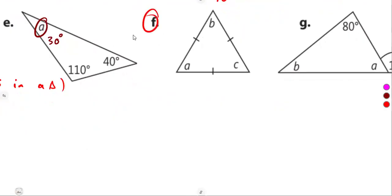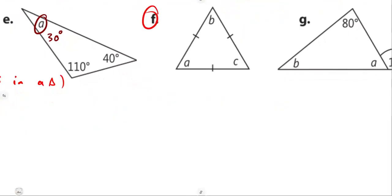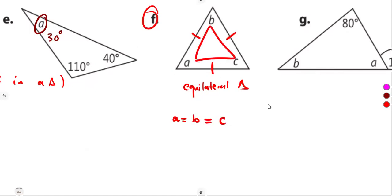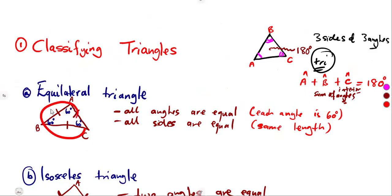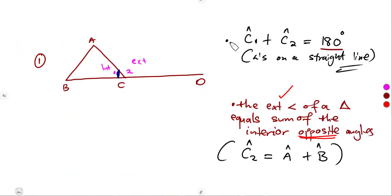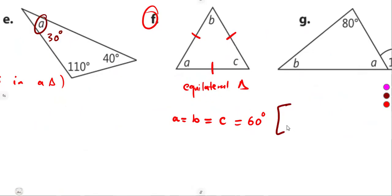On part f, we have an equilateral triangle — all three sides are equal, as indicated by the tick marks. From the properties of an equilateral triangle, each interior angle equals 60 degrees. So angle A equals angle B equals angle C equals 60 degrees.